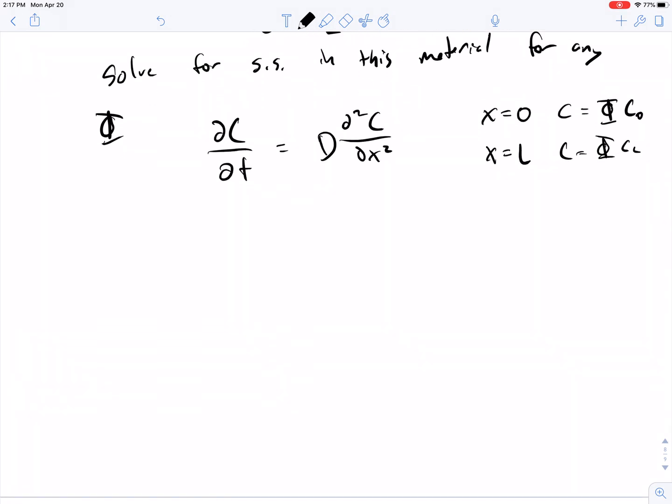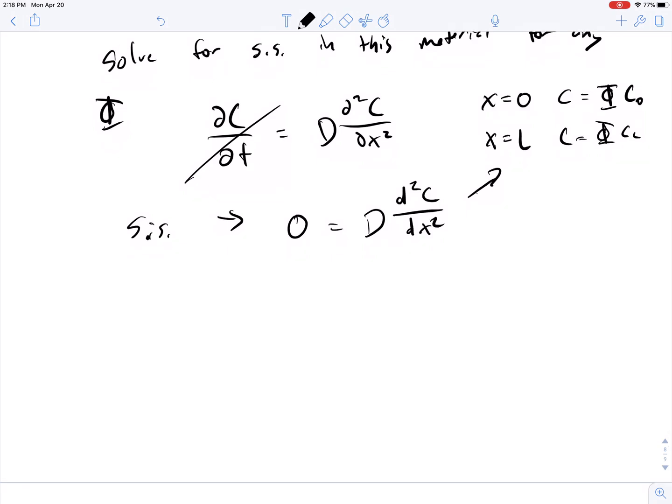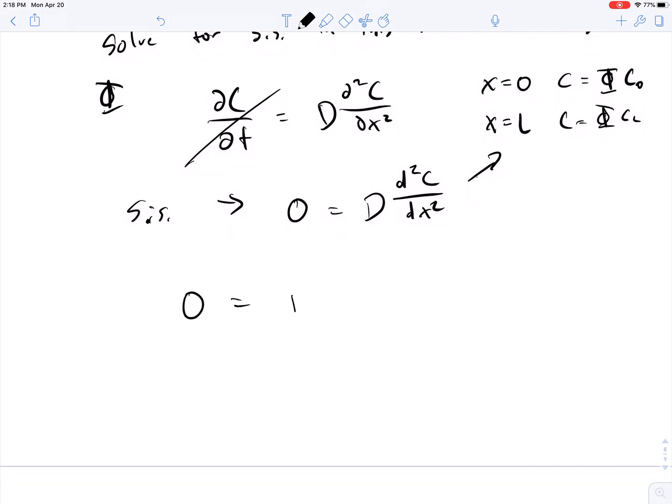So at steady state, first thing we can do is cross that out. And then what this gives us is 0 equals D. And now we're going to work with total derivatives because concentration is a function of only position x. We get this simpler second order differential equation with these boundary conditions. How do you solve this? The same way we've solved it for Fourier's problems. You separate out the first derivative. Let me explicitly show that so that it's very clear. 0 equals D times D by dx of dC/dx.